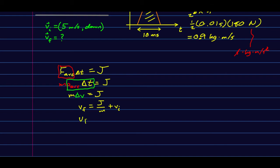So Vf is 0.9 kilogram meters per second over 0.1 kilogram—that's the 100 grams. Kilograms cancel. Minus five meters per second. That comes out plus four meters per second, four meters per second up.